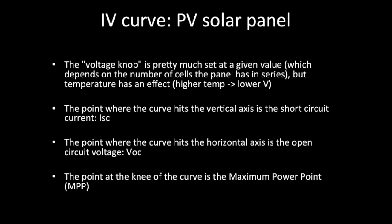That's a little counterintuitive to some people, but a higher temperature panel reduces your power. Ironically, the more it's in the sun, the higher temperature it gets, and actually the lower the power is. The point where the curve hits the vertical axis is called the short circuit current, ISC. The point where the curve hits the horizontal axis is the open circuit voltage, VOC. And the point at the knee of the curve is the maximum power point.